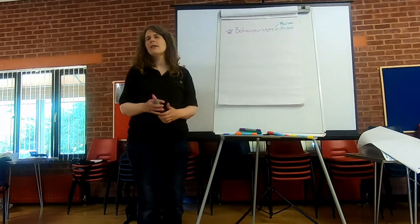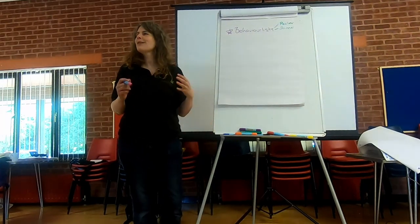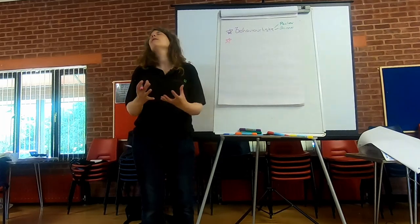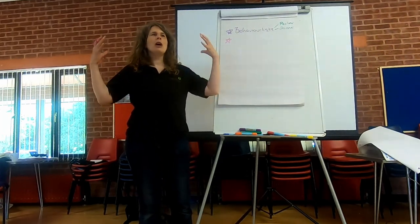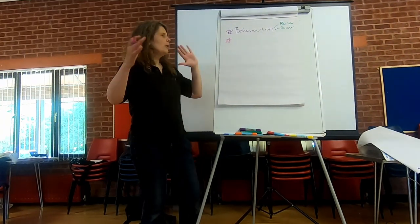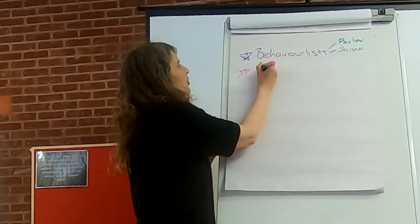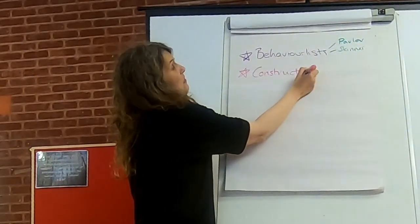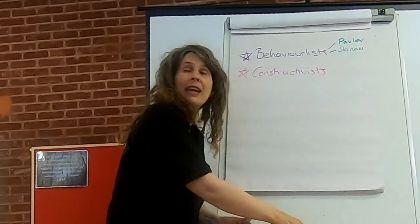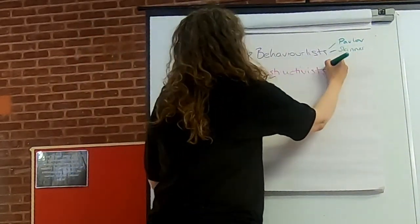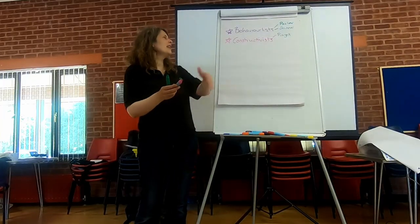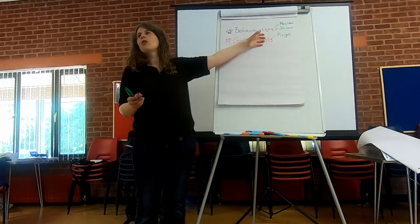Some theorists felt that was too simple — that it doesn't seem quite right when it comes to human beings. Surely we are more actively involved and construct our own understanding of the world, rather than just being passive receivers changed by external stimuli. So there are constructivists — and there are different types — but for example Piaget, who was probably one of the first, was looking particularly at cognitive abilities, so he would be considered a cognitive constructivist.